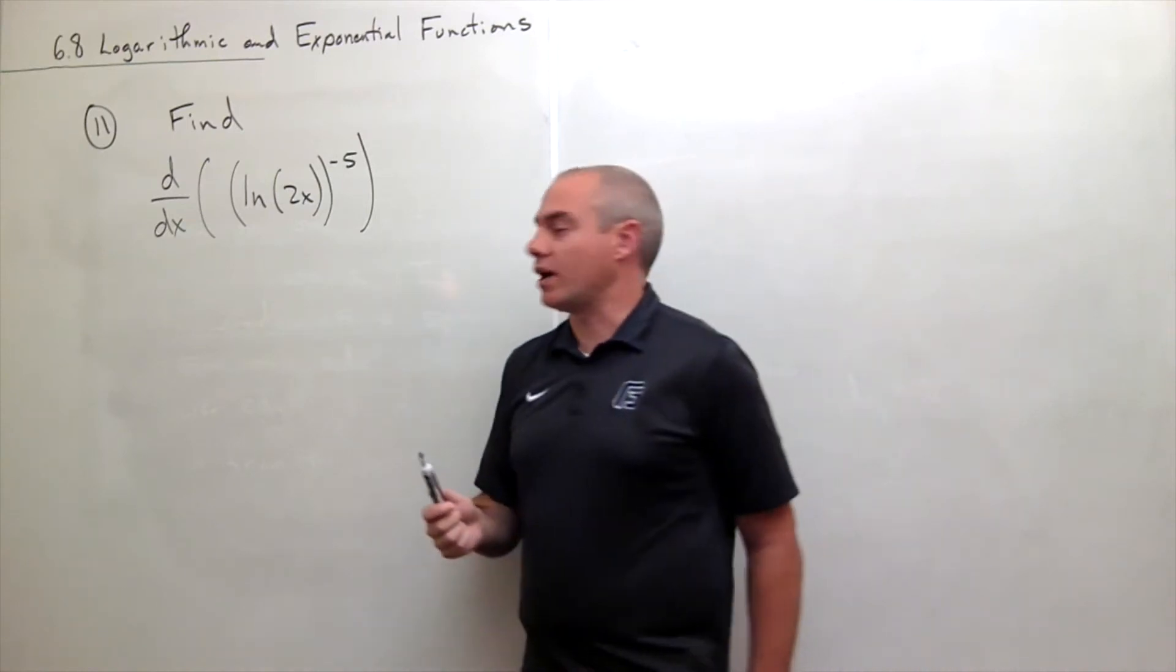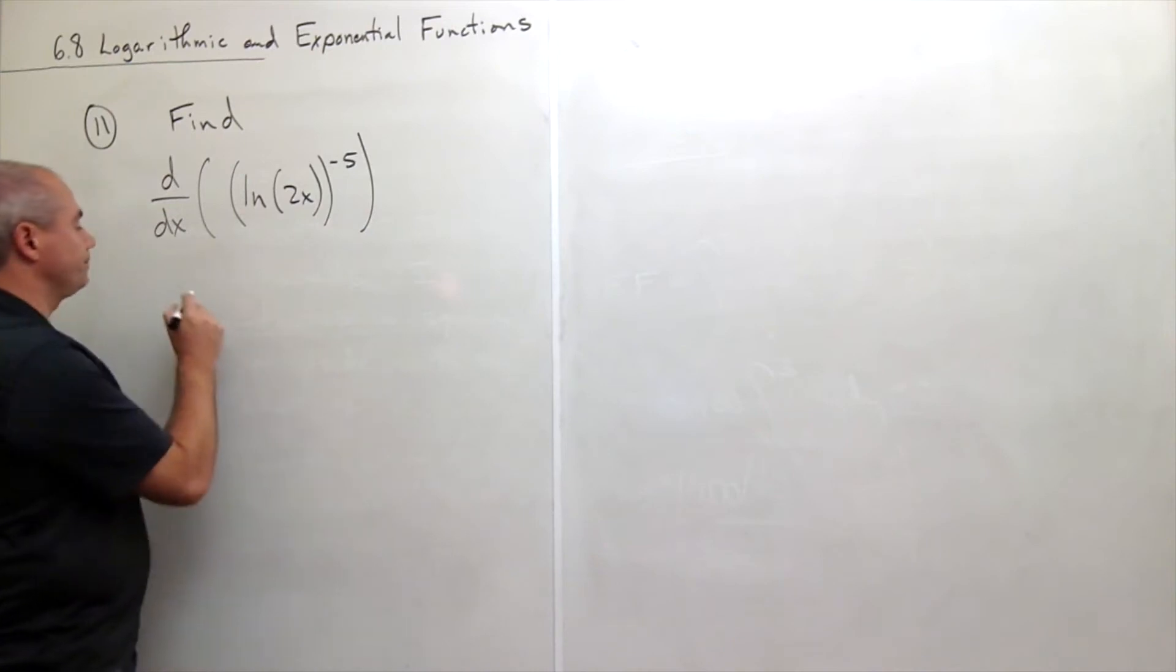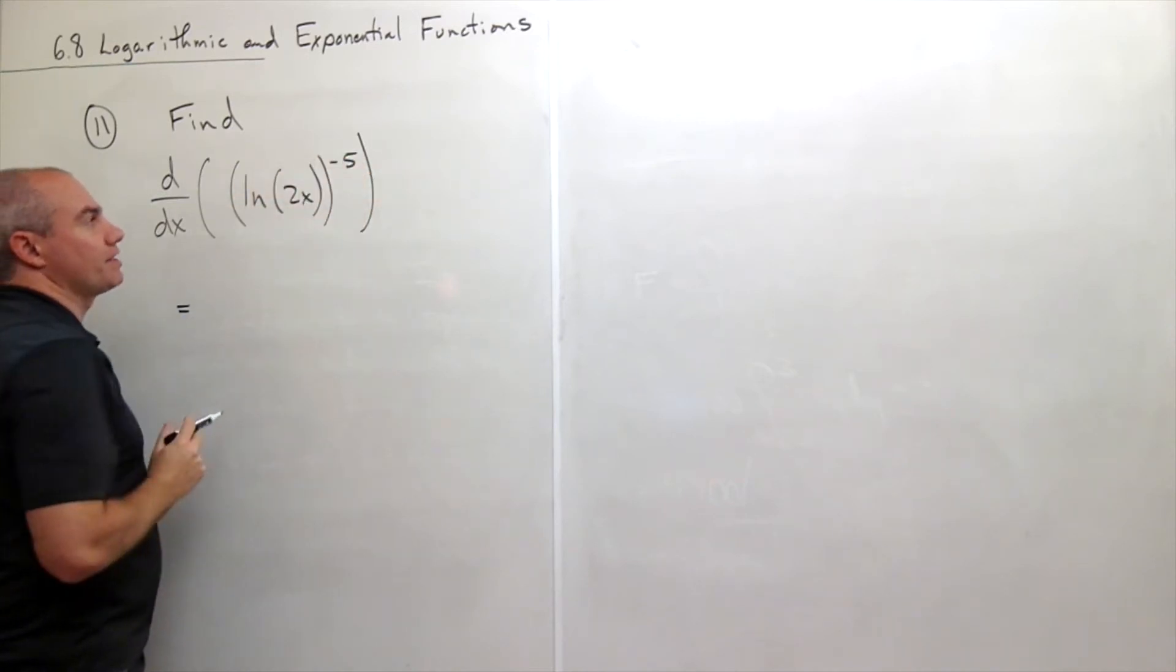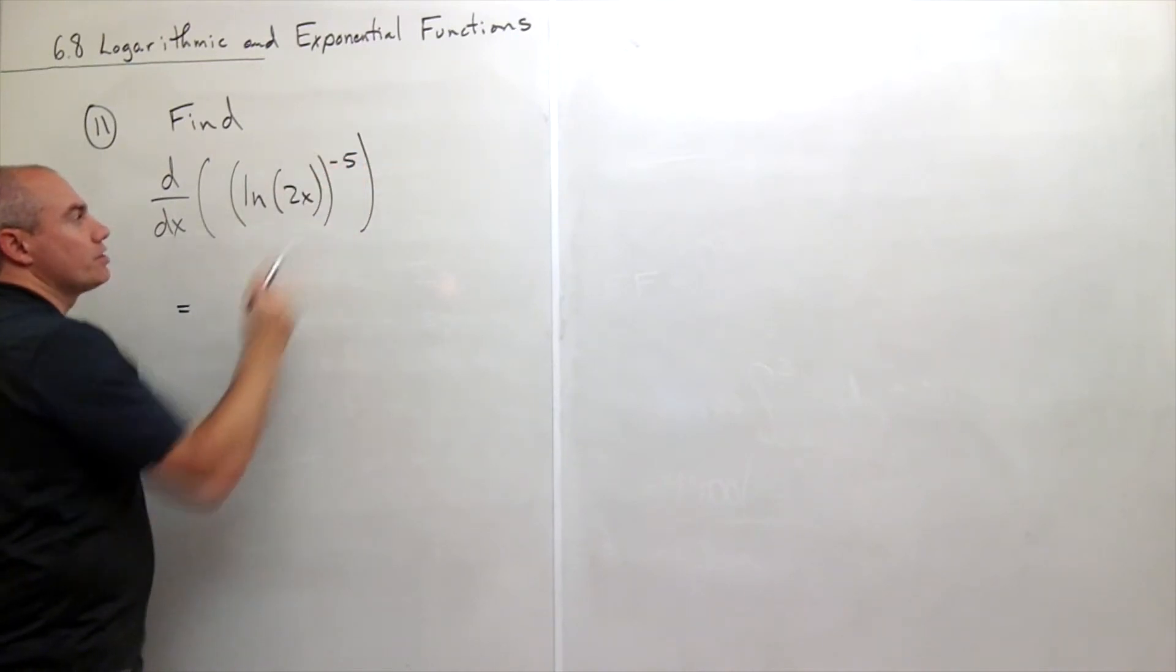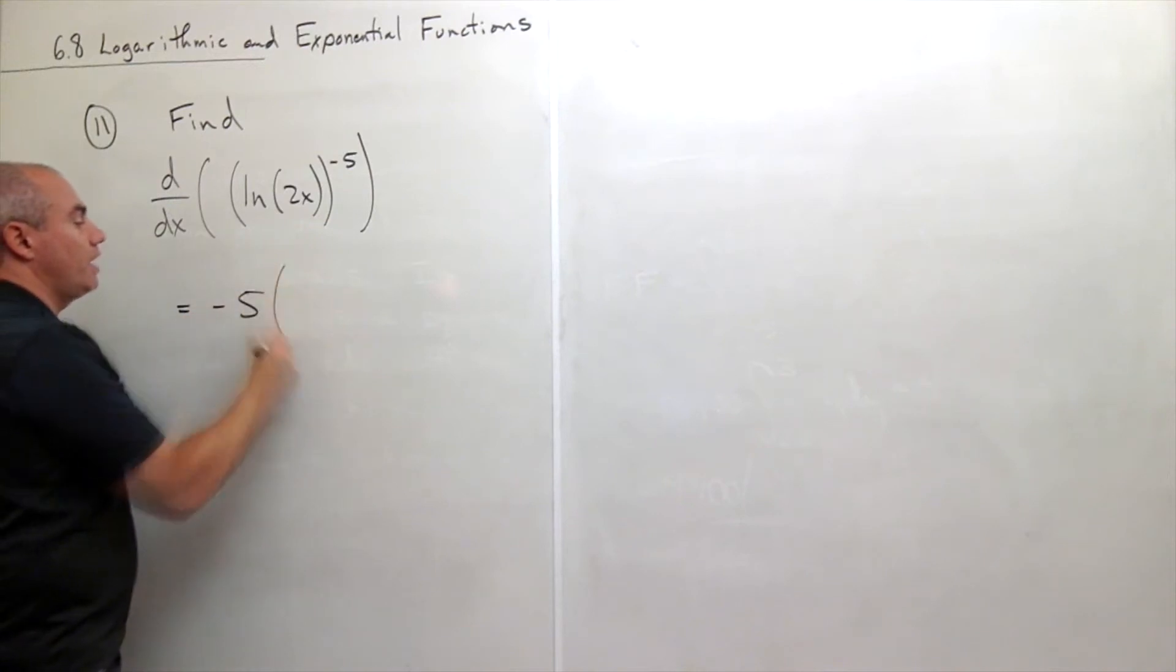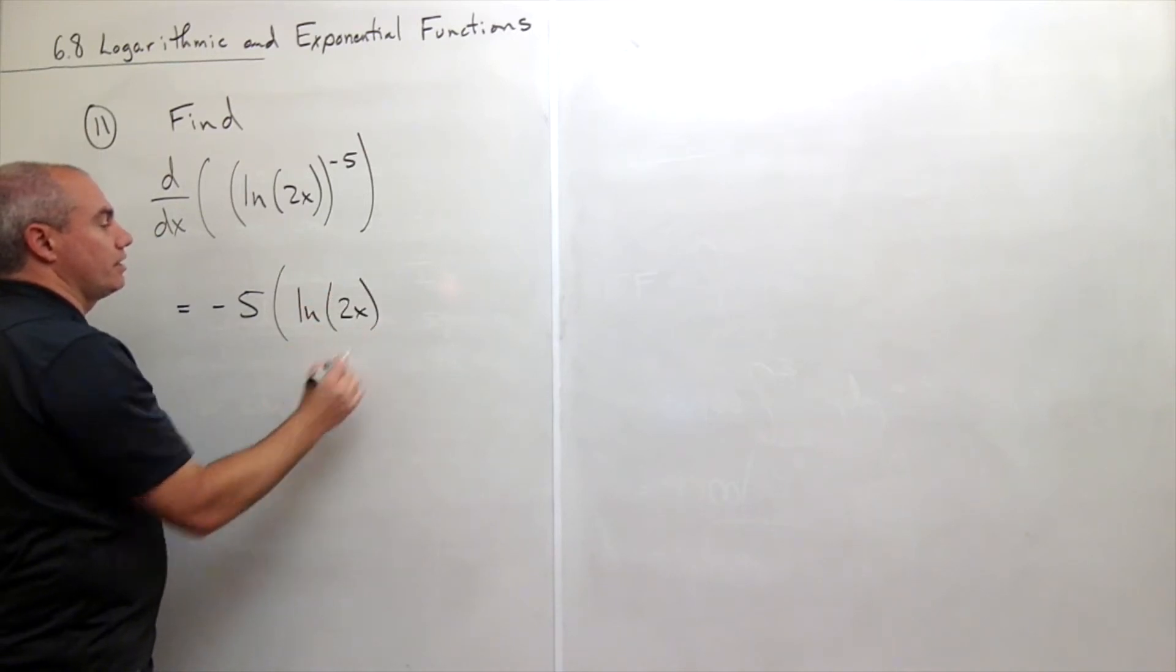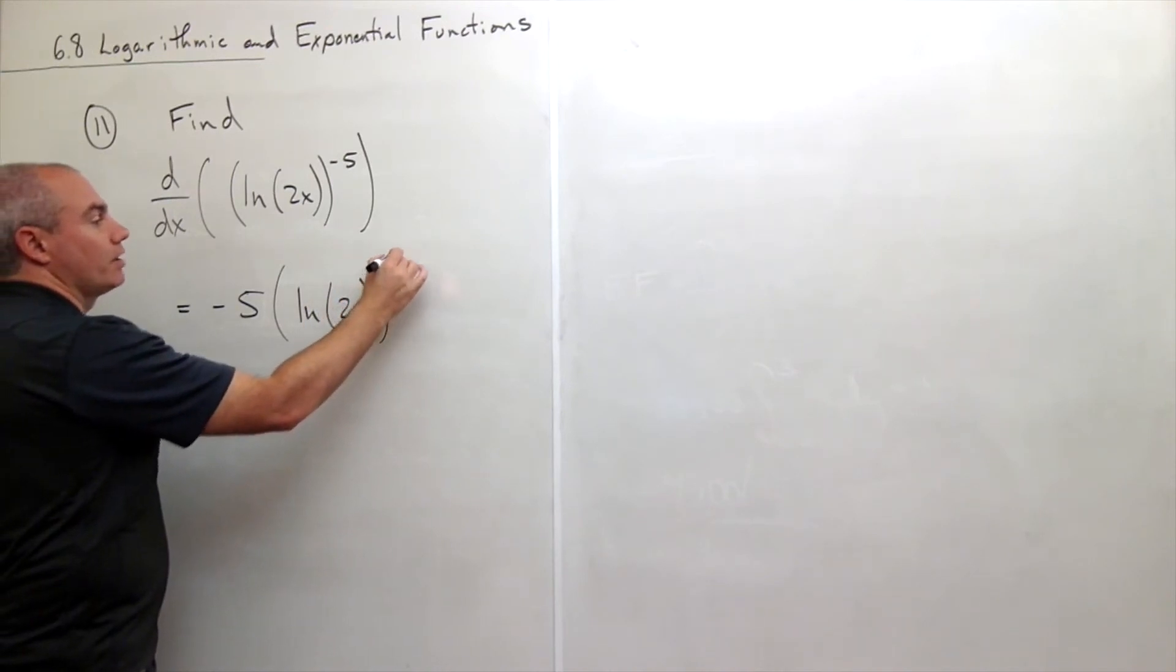All right, so what I see here first of all is if I want to take this derivative, it's equal to... well, I have ln(2x) raised to the power minus 5. So I have something raised to the minus 5 power. So I can use the chain rule. I'm going to bring down the minus 5 and then leave this thing alone by the chain rule. So I have the ln(2x) sitting in here, but then this is going to be to the power negative 6.